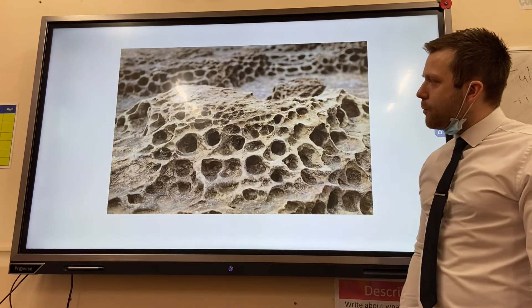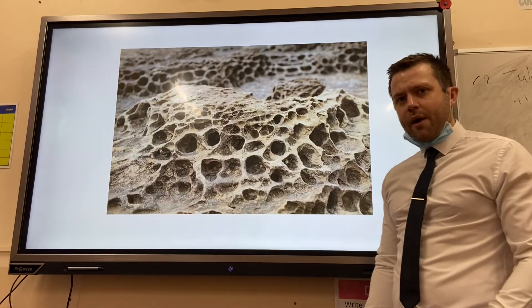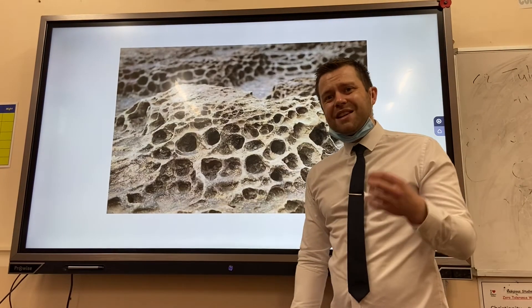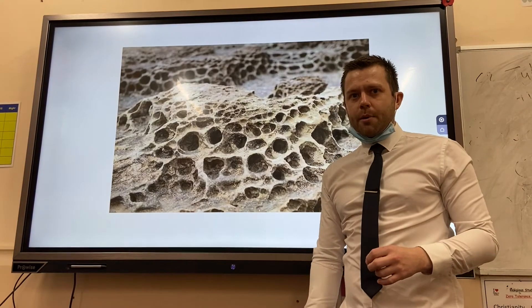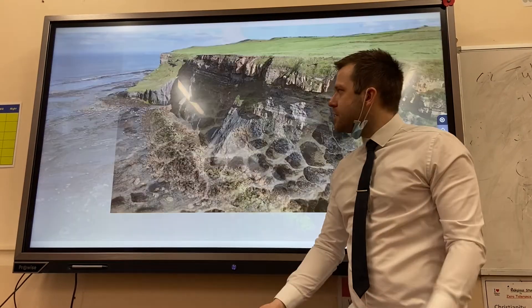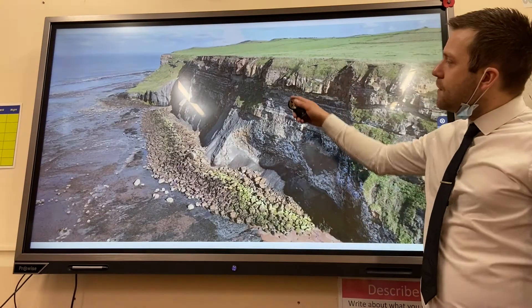The second type of weathering is chemical weathering. Slightly acidic rainwater gets into the calcium carbonate in the rocks and dissolves it.